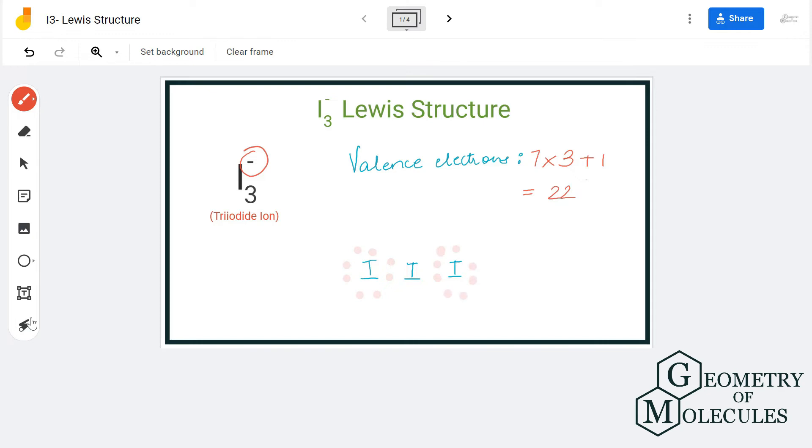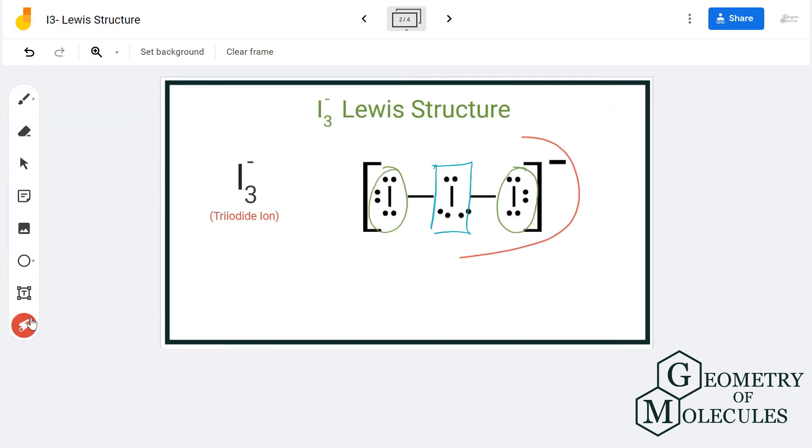Now when we come to the central iodine atom, we are left with six more valence electrons. We will place all six electrons around the central iodine atom. You might wonder why this atom has more than eight valence electrons. Well, yes, that is the case, and it is a very unusual Lewis structure.